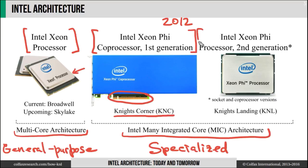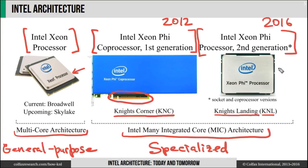In 2016, Intel introduced the second generation of Xeon Phi, known by the code name Knight's Landing, or KNL. It was introduced as a bootable CPU, meaning that it does all the things that a normal CPU does: it boots the operating system, controls the main memory, storage, and networking. And at the same time, this is a specialized architecture for computational applications.